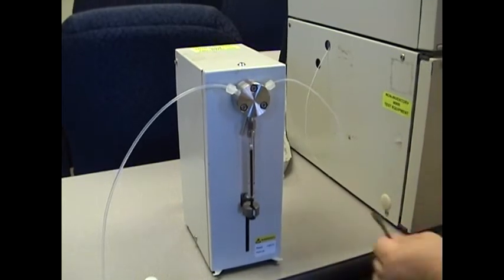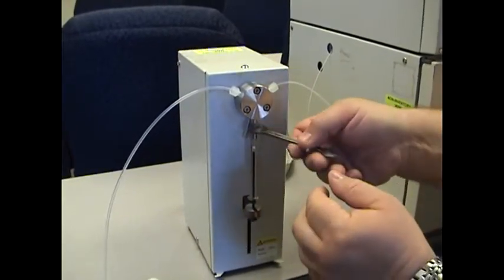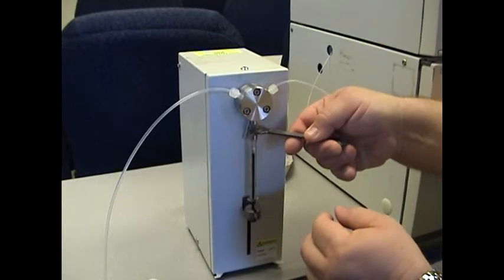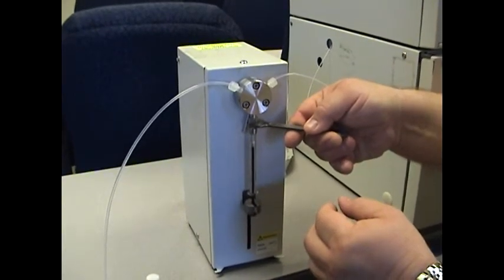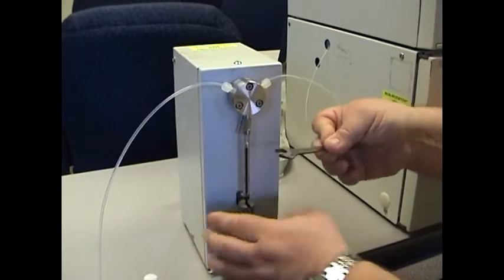Then you can tighten that same fitting into the valve body using the metric wrench. This makes it a little bit easier to get a tighter fitting to syringe connection.